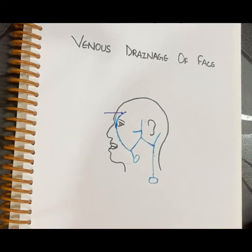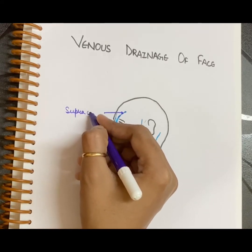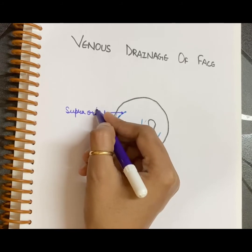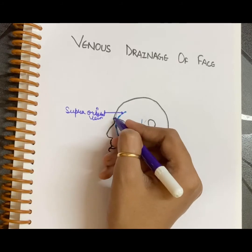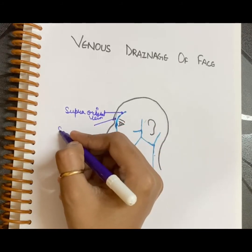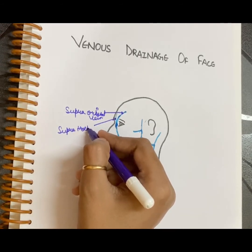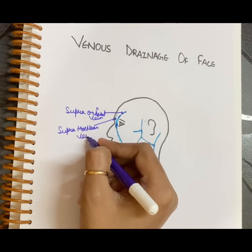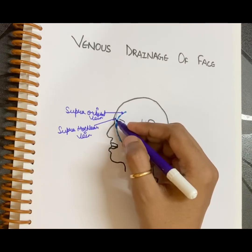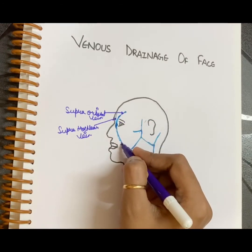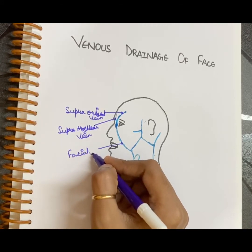This one is the supraorbital vein, and this one is the supratrochlear vein. These unite to form the angular vein, which continues as the facial vein.